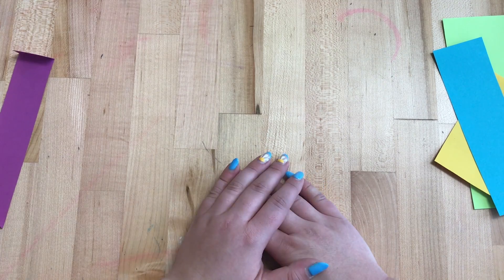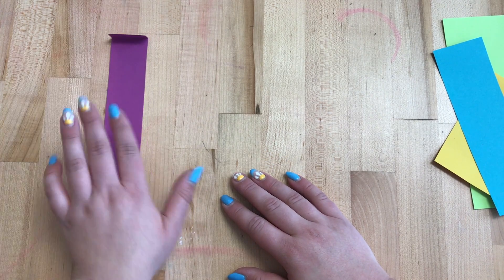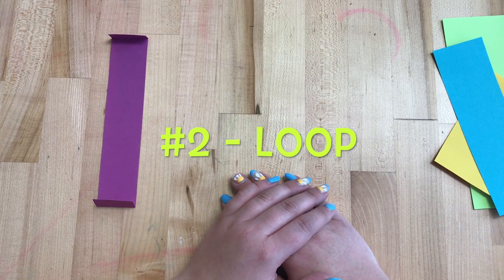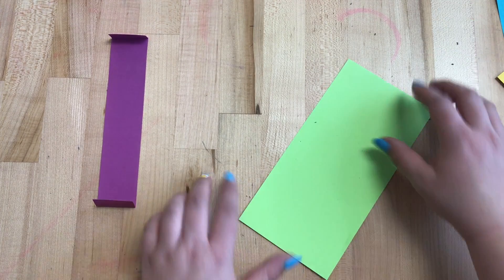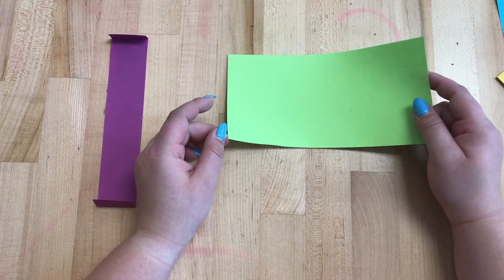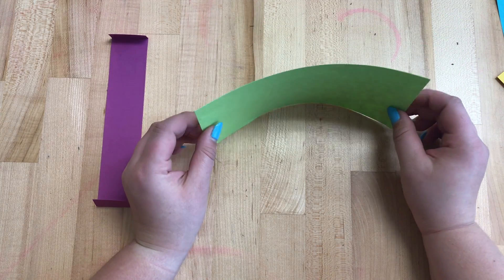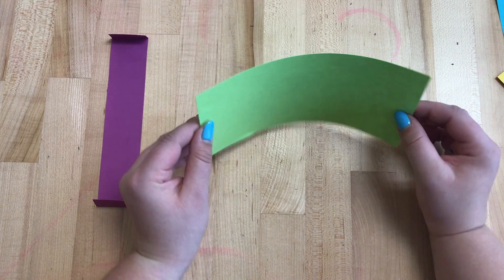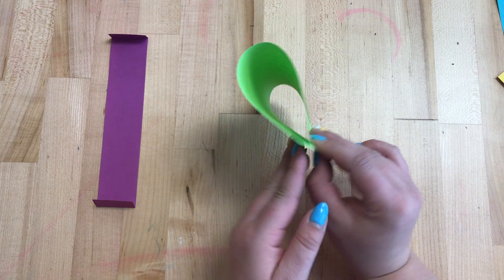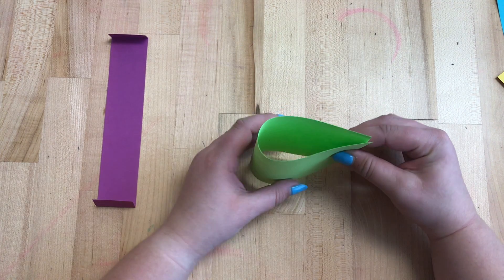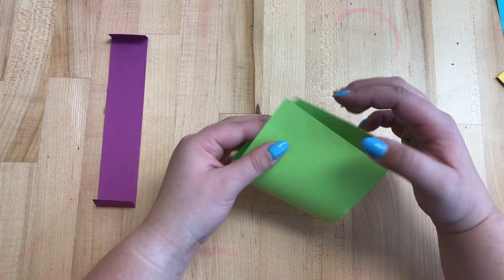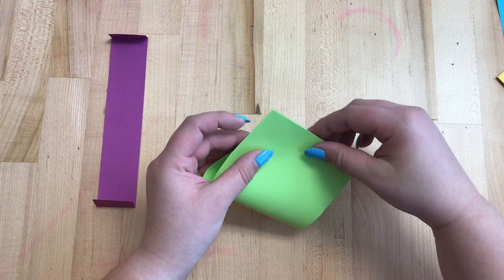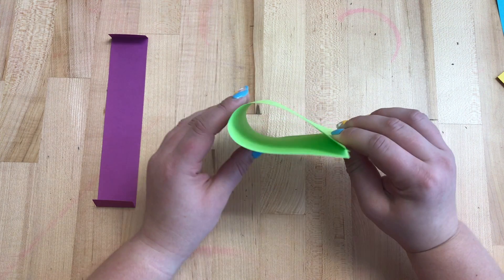The next shape that we're going to create with paper is a loop. The loop, we are going to use a larger piece of paper. To make a loop, what you're going to do is take your paper and you're just going to push it like this. Kind of looks like a teardrop shape from the top. And then we would glue right here and hold it down. That's how you make a loop.